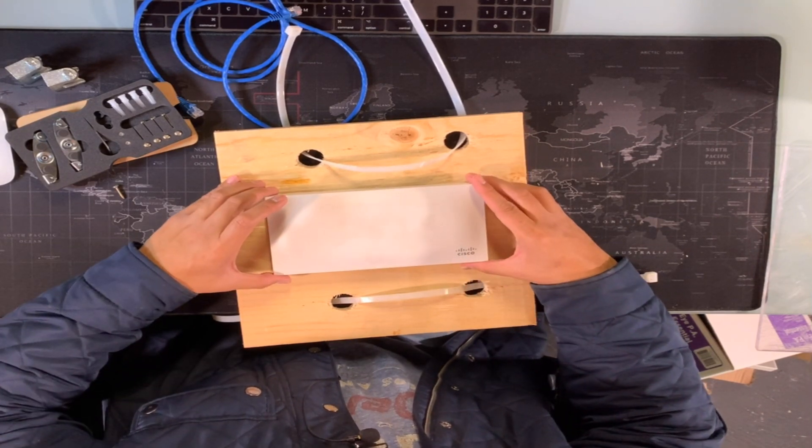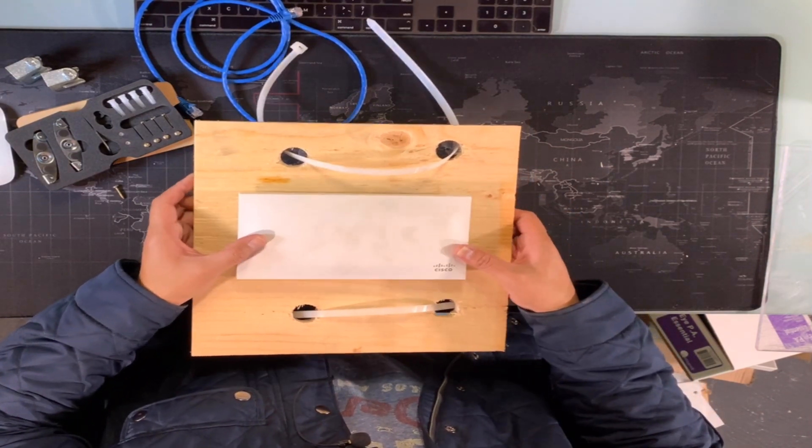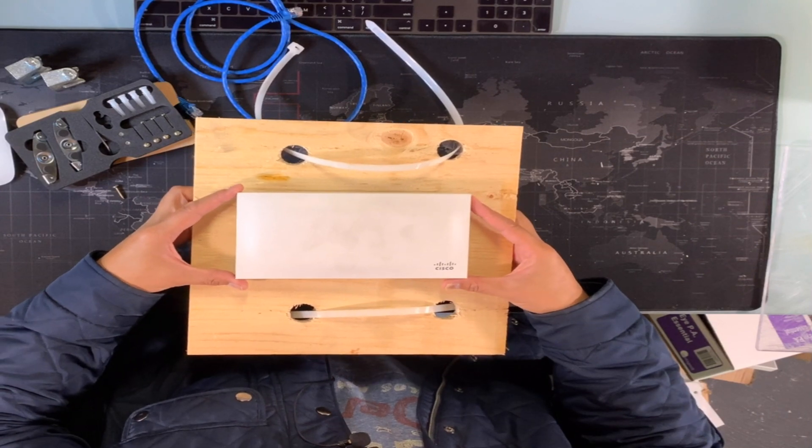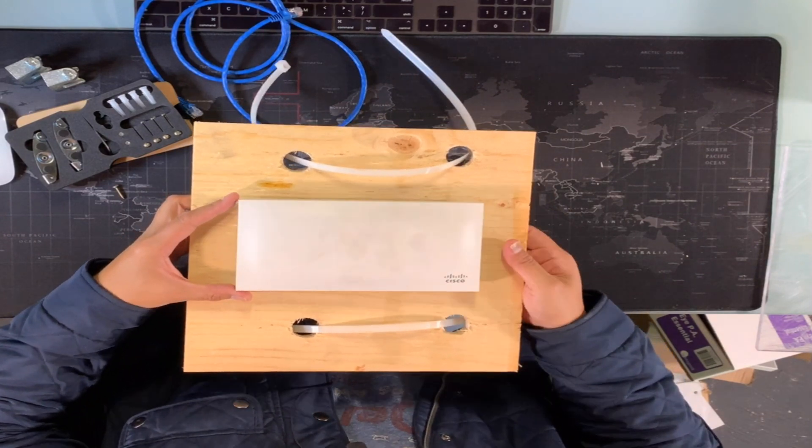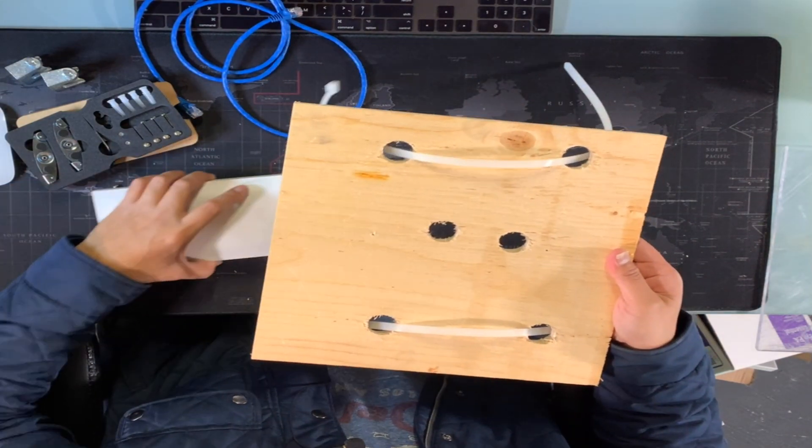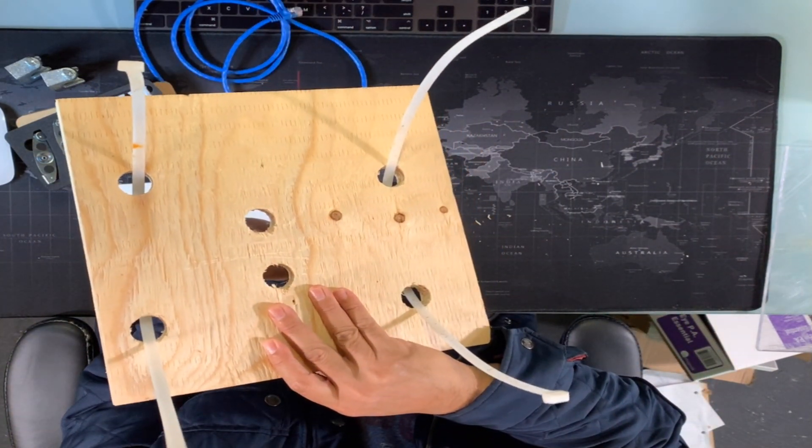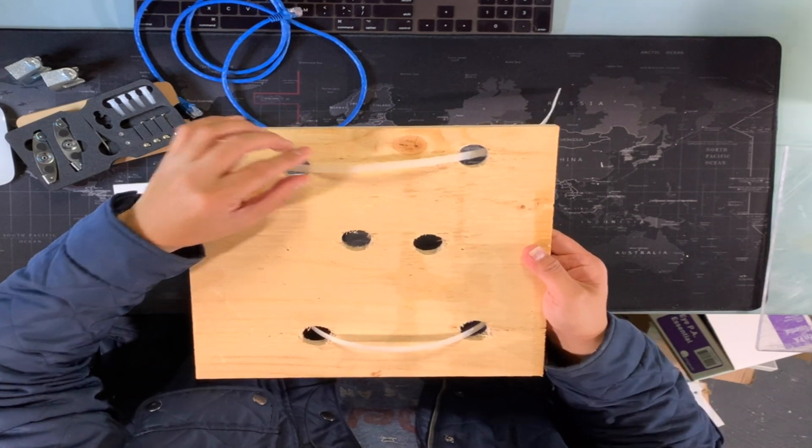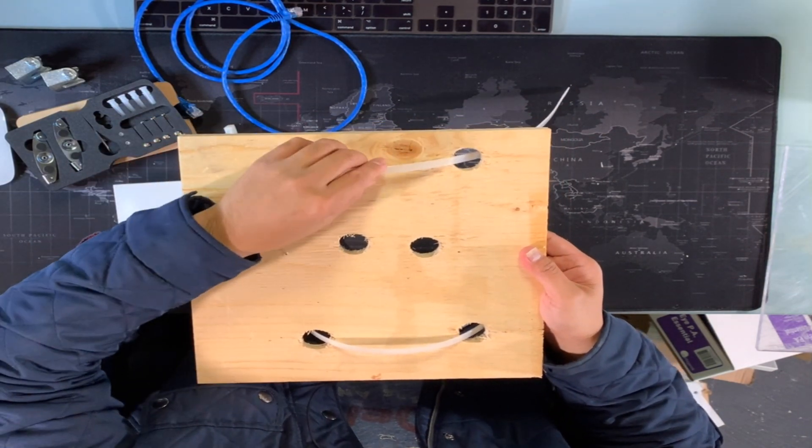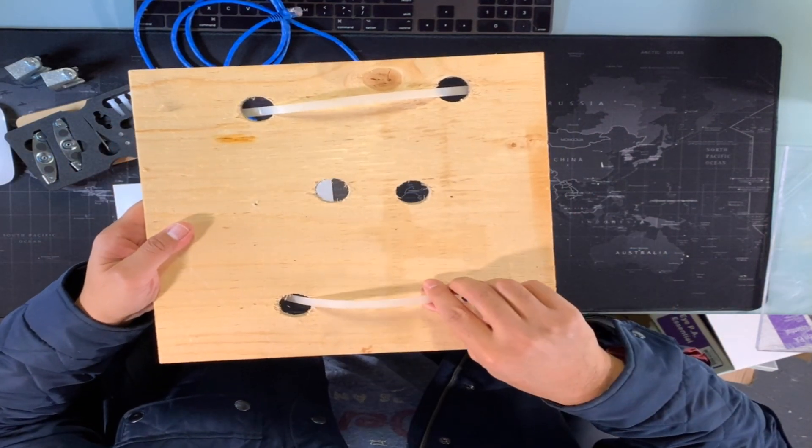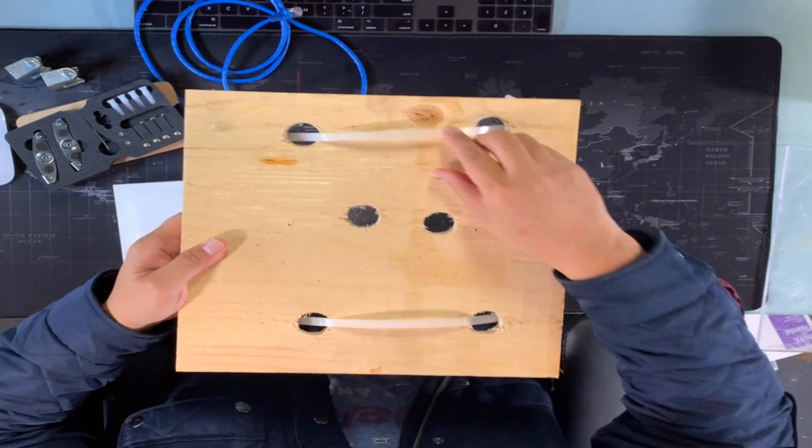So that's the installation of an MR-33 access point or a Meraki MR access point in a warehouse ceiling. That's how we like to install our APs in the ceiling. And that was just created with just a regular hammer drill with a large bit on it.